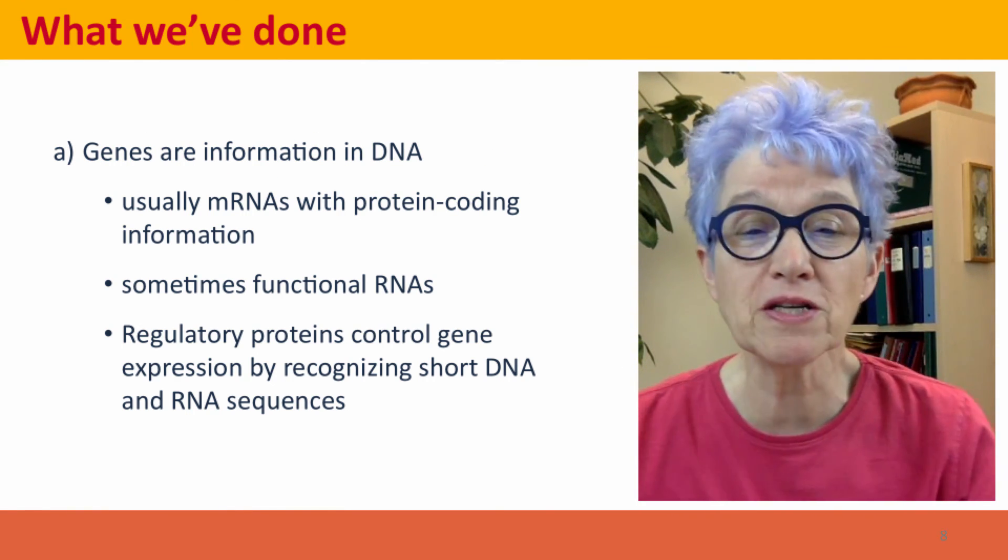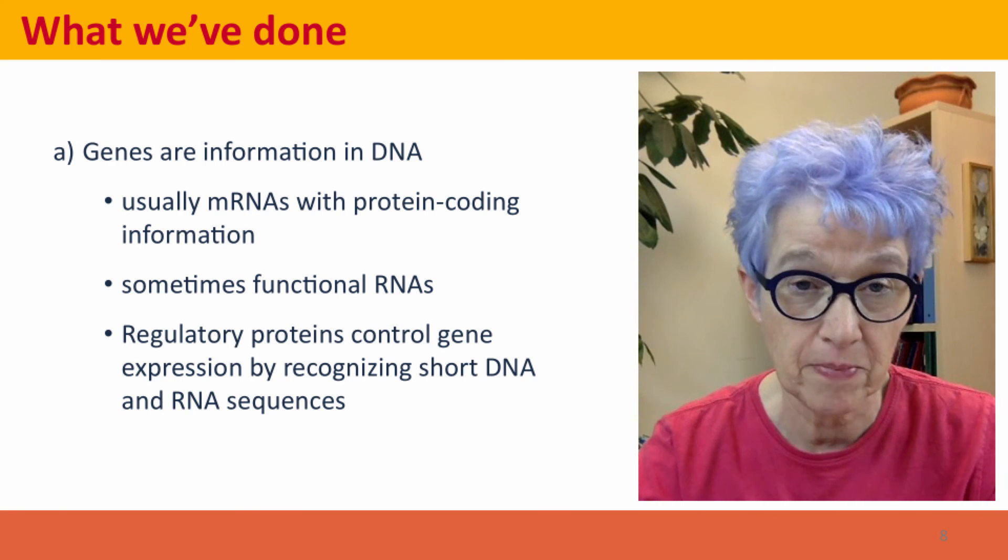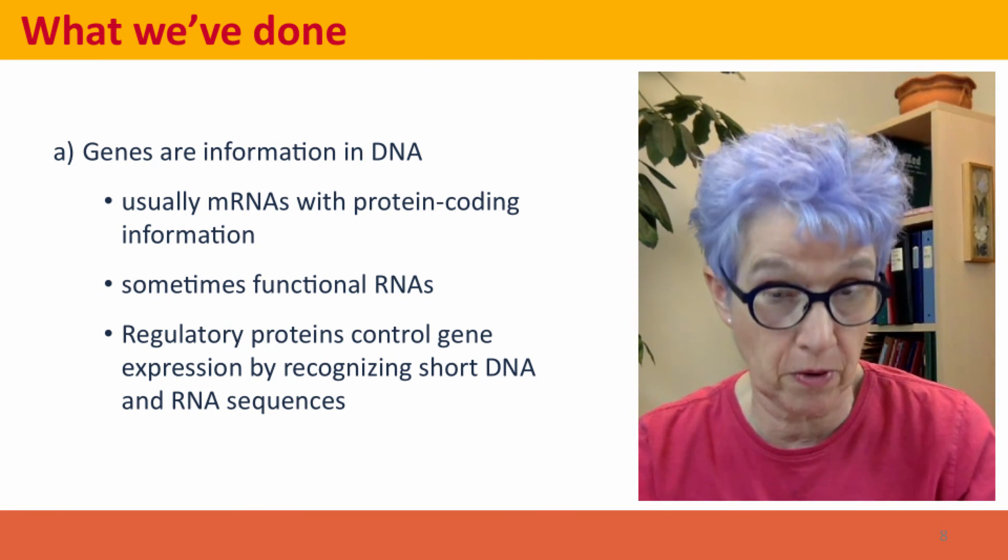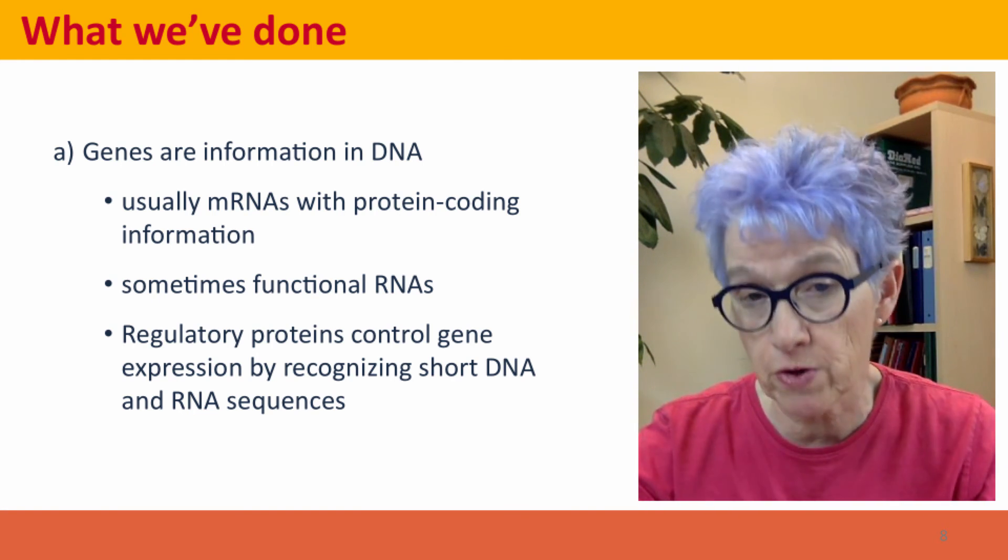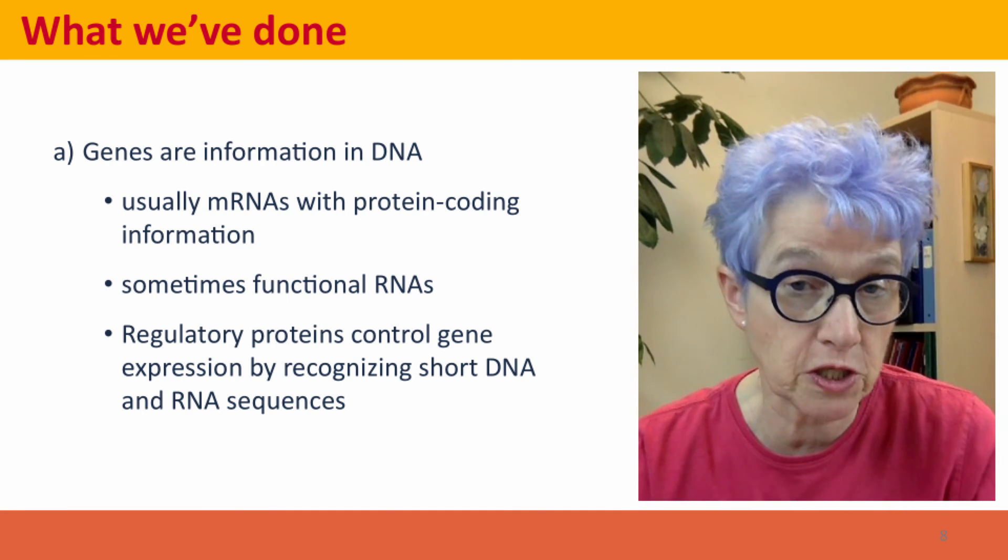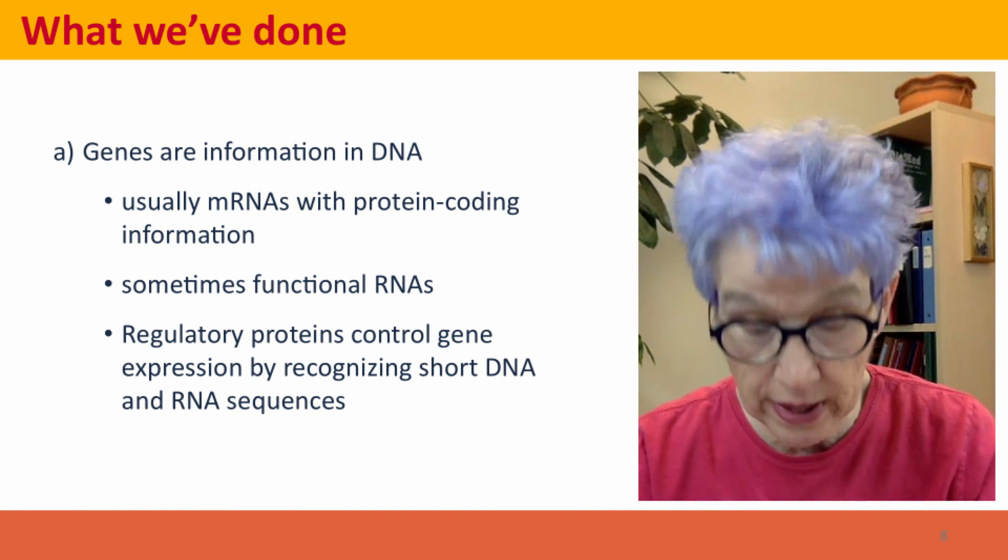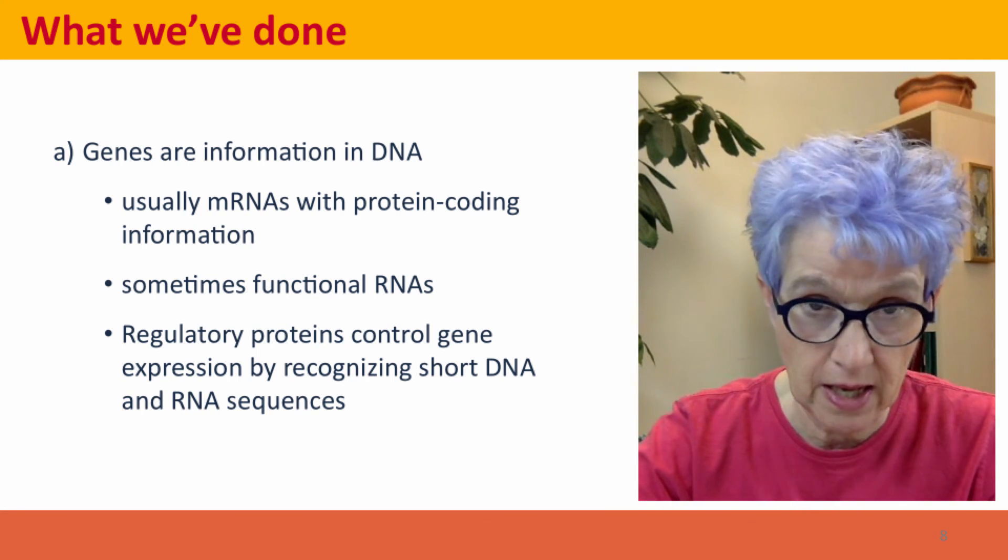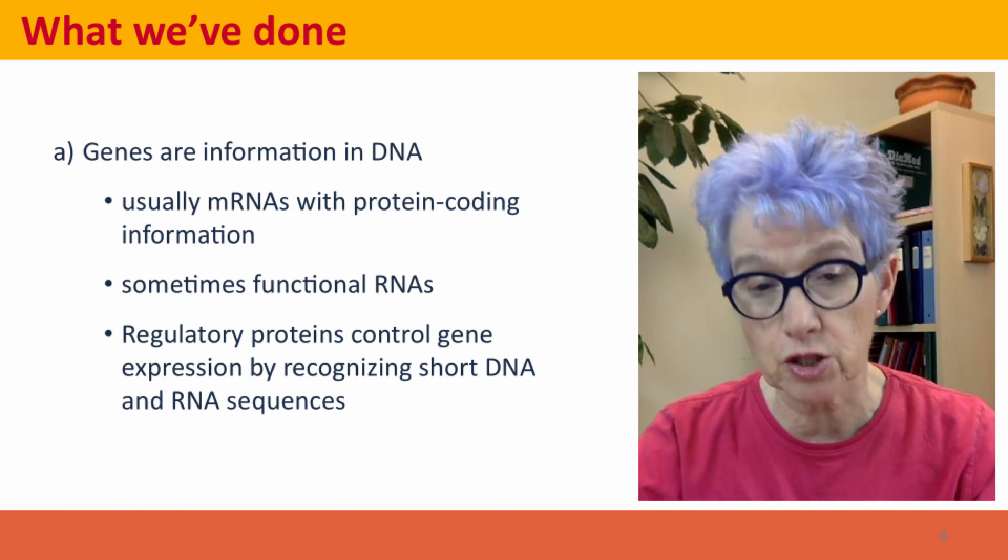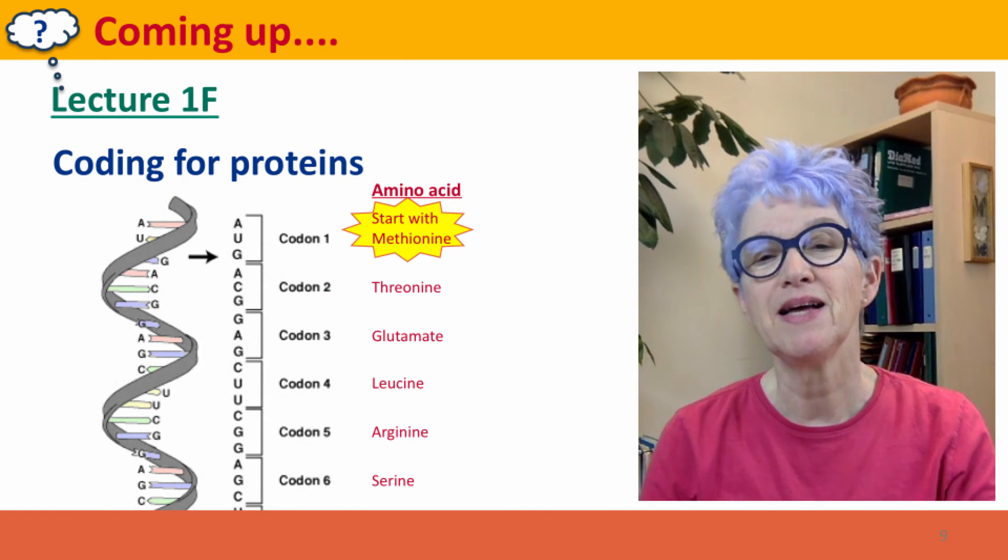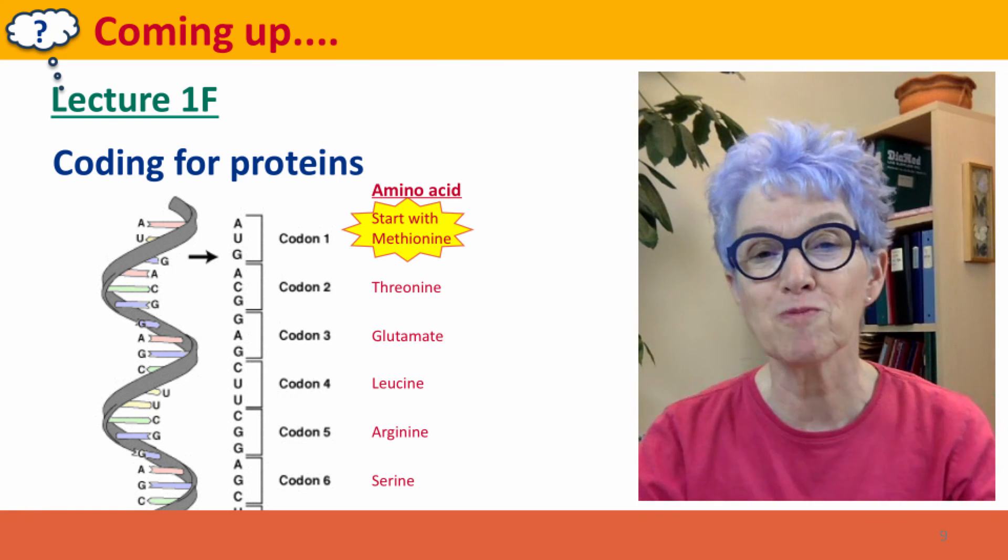Now, what we've done, we've talked about genes. The genes are basically informational entities in our DNA. Sometimes they specify functional RNAs, like parts of the ribosome. Most of them specify messenger RNAs that code for proteins. And genes are identified by the cell by the presence of regulatory signals, short sequences in the DNA that tell RNA polymerase to make an RNA copy, and short sequences that act in the RNA to tell the ribosome where to start and stop to make a protein. Coming up next, we're going to talk about how this coding for proteins actually works. I hope to see you there.